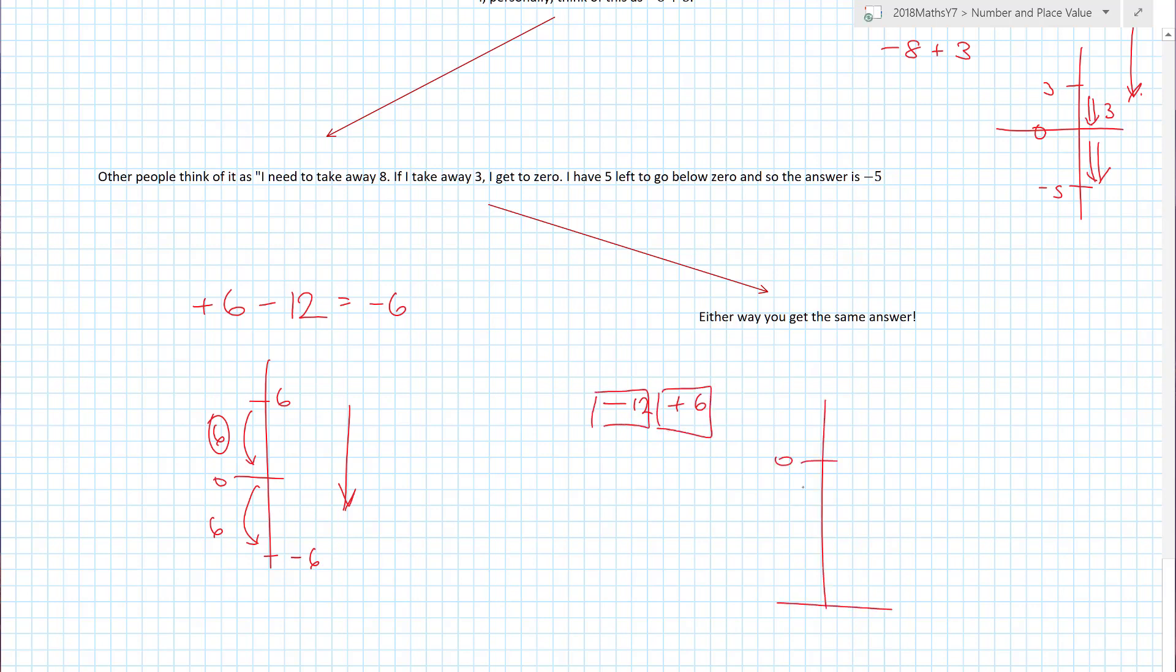Lots and lots of different ways I could have done minus twelve plus six. Exactly the same sum. Remember, this time: there is my zero, there is minus twelve. Plus six means we're going to get six places closer to zero, which would put me at minus six. I actually think I prefer to use this number line here. Now again, you don't have to do all of this in your head. Please stop thinking you have to do this in your head. You don't.